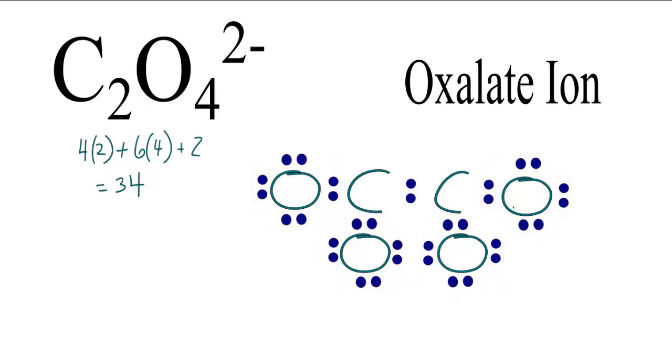However, we have a problem. If you look at the carbons, each carbon only has 6 valence electrons. Its octet is not full. So we need somehow to get the carbons to have a full outer shell.